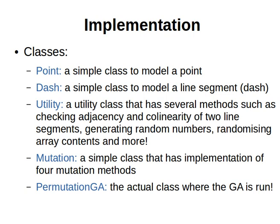Welcome back. Finally, we will start showing the complete implementation of our genetic algorithm to solve this permutation representation problem. In this implementation, I will have the following five classes. A class called Point, which is a simple class to model a point.